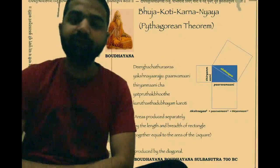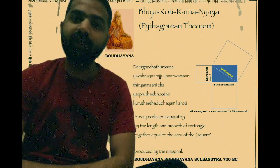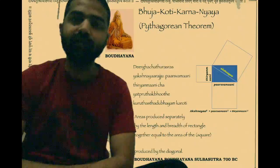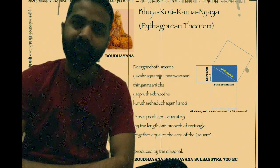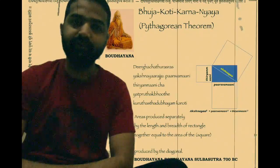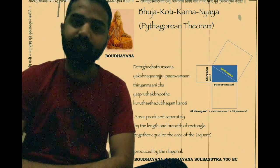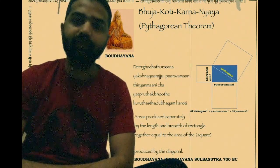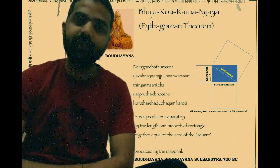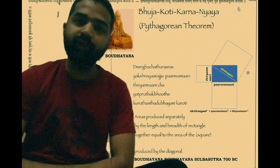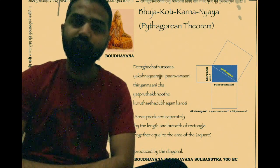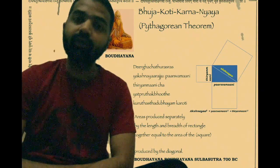This Sulba Sutram describes the construction of Yagasalas and Yengekundam. When we had our discussion about Pi, we learnt that these Yagasalas and Yengekundam should be of specific dimensions, and this document describes exactly how they are to be constructed. It also describes different types of geometry — how one geometry could be converted into another — and what kind of materials should be used for construction.